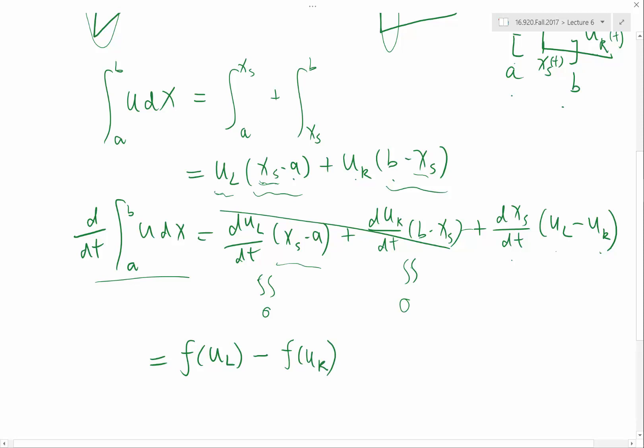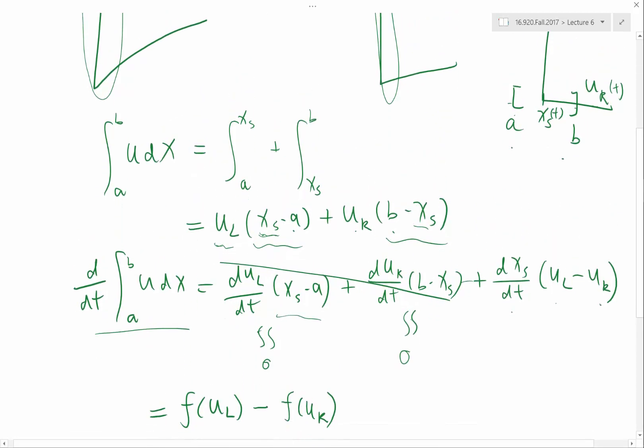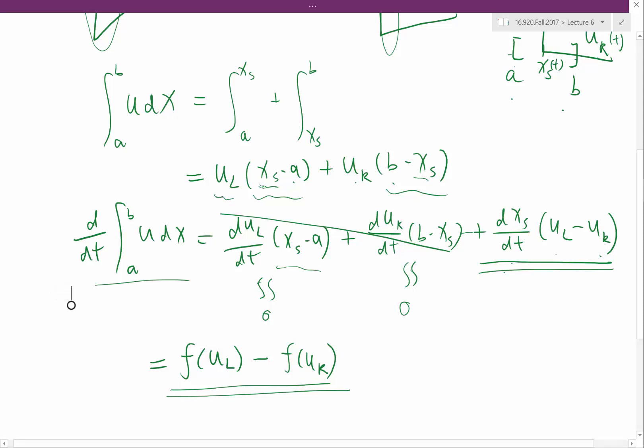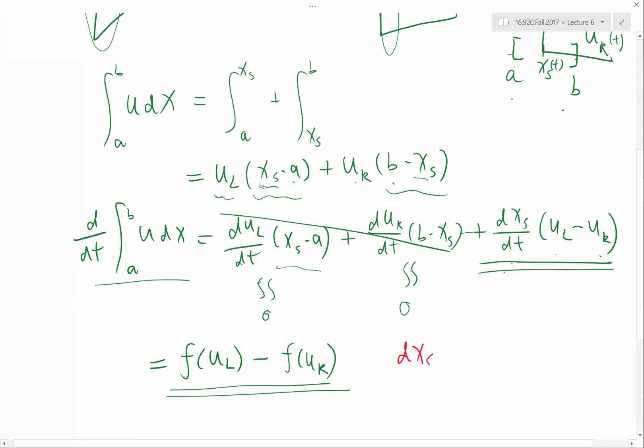All right, so this is what the equation looks like. This is how the application of the integral form of the conservation law into this very small control volume around the shock wave is going to give us. It's going to give us the movement speed of the shock wave times ul minus ur is equal to the difference between the flux at left and the right. So if we divide them out, what we get is dxs dt is equal to f of ul minus f of ur divided by ul minus ur.